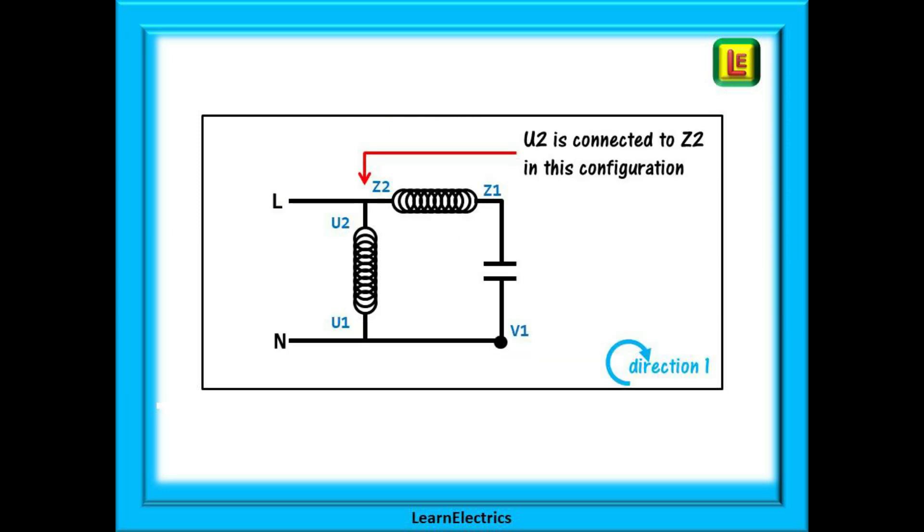Let's look at motor direction. In this configuration U2 and Z2 are connected together on the terminal block. This makes the motor rotate in direction 1. Now we have changed things and U1 is connected to Z2. This causes the motor to rotate in the opposite direction, direction number 2.